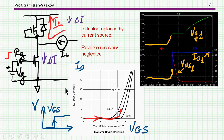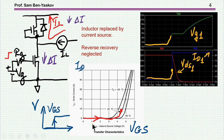Before going into the explanation, let's see the phenomenon itself. We are replacing the inductor by a current source because during this transition the current is just about constant, and we are also neglecting the reverse recovery of the diode. We start with current going through the diode. Now we have a transition at the input to the gate, and we'll be moving on this curve showing the dependence of drain current on VGS — we see just about the threshold here.